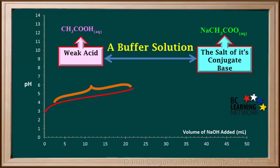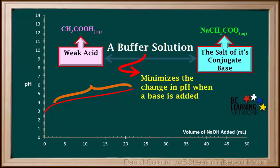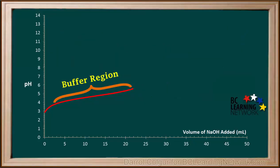A mixture of a weak acid and the salt of its conjugate base constitutes a buffer solution. A buffer solution minimizes the change in pH when a base is added. The decrease in the rate of change of pH due to the buffering effect causes the slope of the curve to stay fairly shallow during this region. This slightly flattened-out portion of a weak acid-strong base titration curve is called the buffer region.